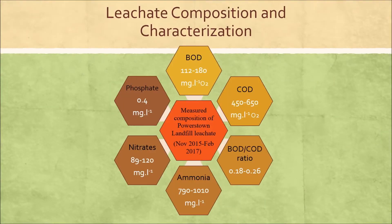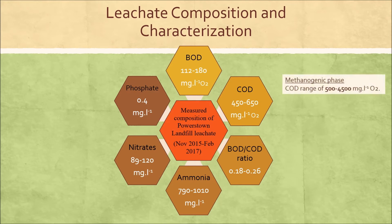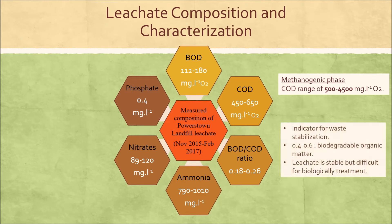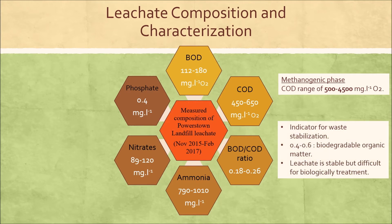The leachate composition and characterization: The BOD varied between 112 to 180 mg per liter, and the COD ranged from 450 to 650 mg per liter. Thus, this landfill is in the methanogenic phase. The BOD/COD ratio is 0.18 to 0.26, indicating stabilization of the waste. A ratio between 0.4 and 0.6 would indicate the organic matter is biodegradable. The leachate in this study is stable and may be difficult to treat biologically but reacts well to physico-chemical treatment.